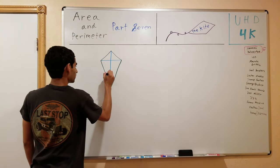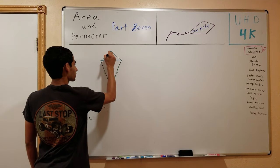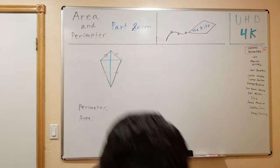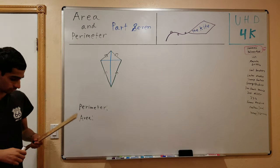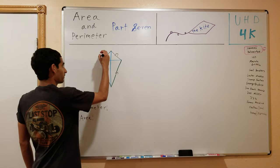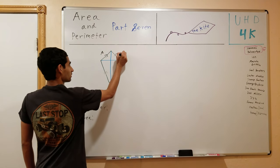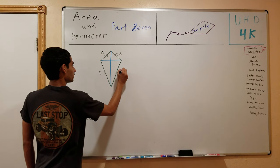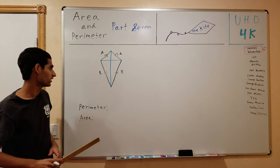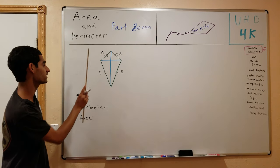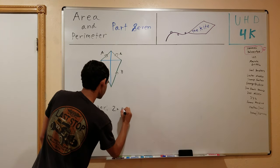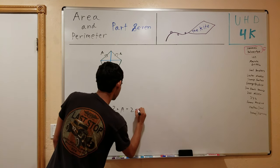So I'm going to circle these two sides and put a square around these two sides. In the kite we have two types of sides: we have side A and side B. I'll use A to label the shorter side and B to label the longer side. Since we have two shorter sides and two longer sides, the perimeter is simply going to be 2 times A plus 2 times B.